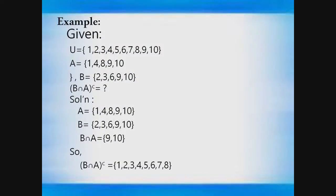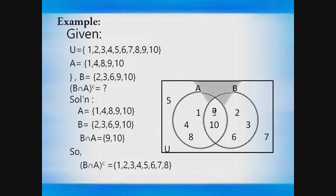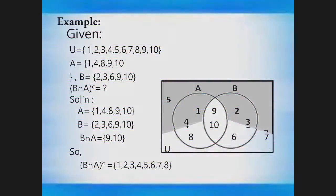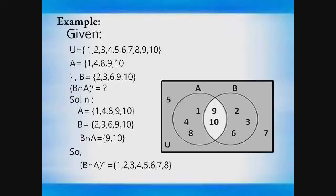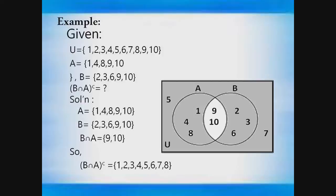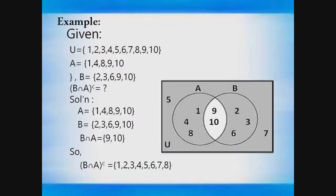Let us now plot it on a Venn diagram. This is the answer for the complement of B intersection A with its Venn diagram. Thank you for watching, and for more exercises just click the link below. Thank you.